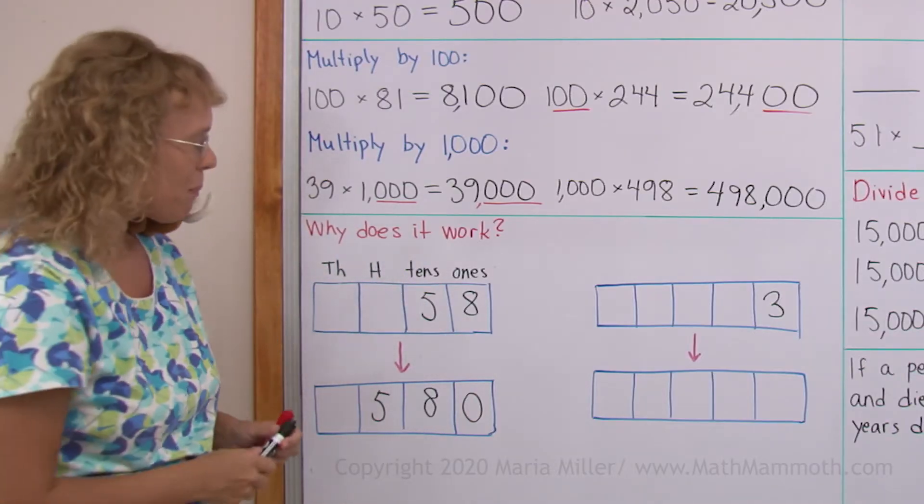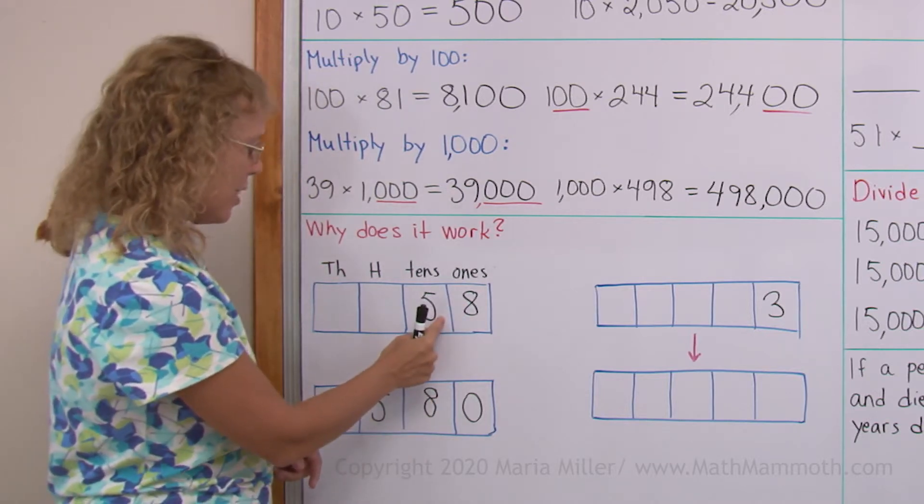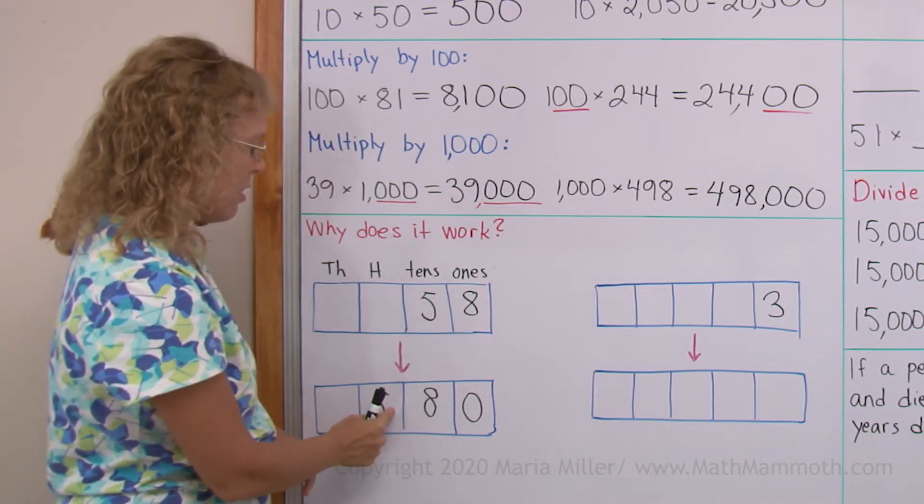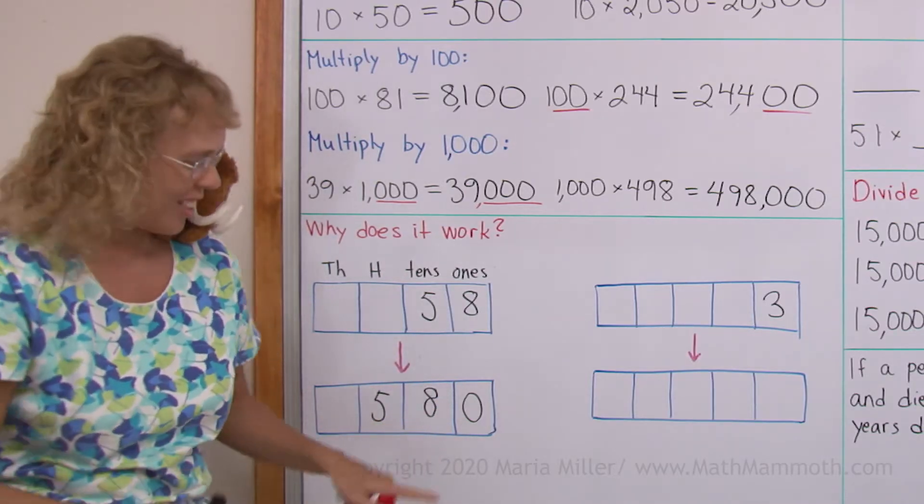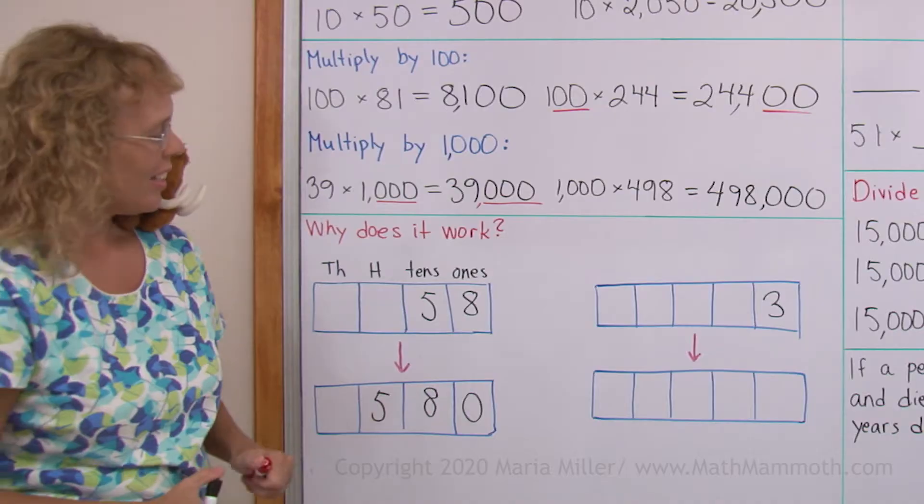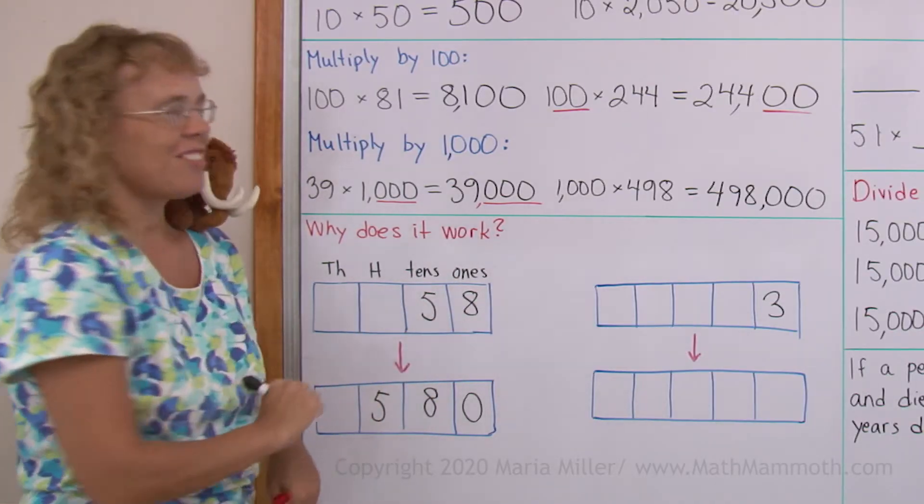And so 58 times ten, the five tens becomes five hundreds. Eight ones becomes eight tens, and then I need to write a zero here in this empty space. So it's the same as the shortcut. I take the 58 and I write zero after it.